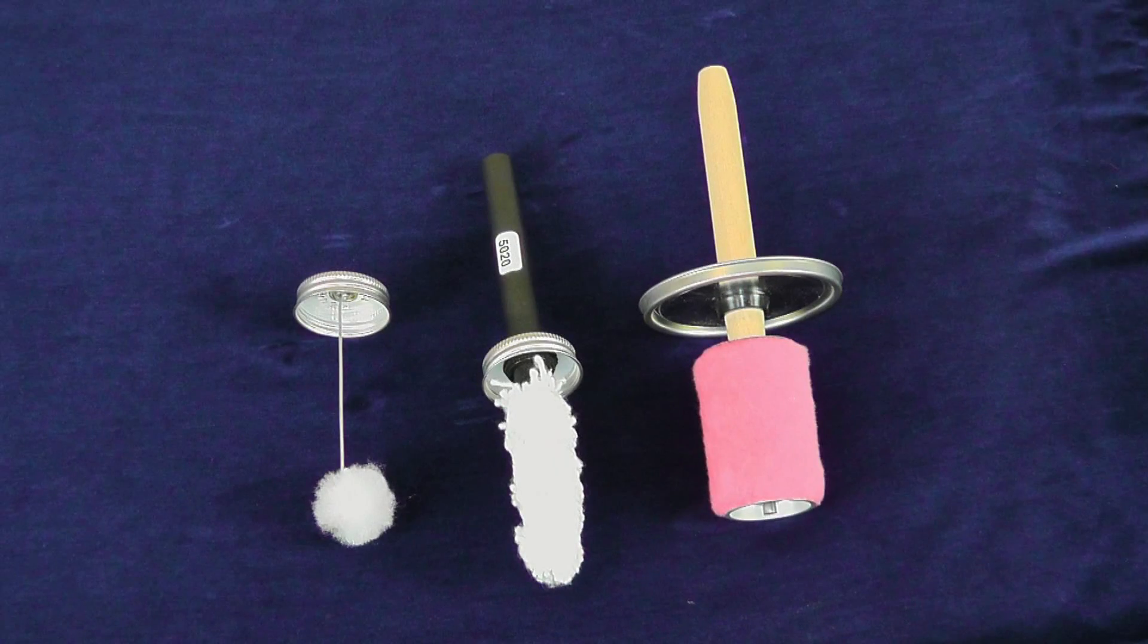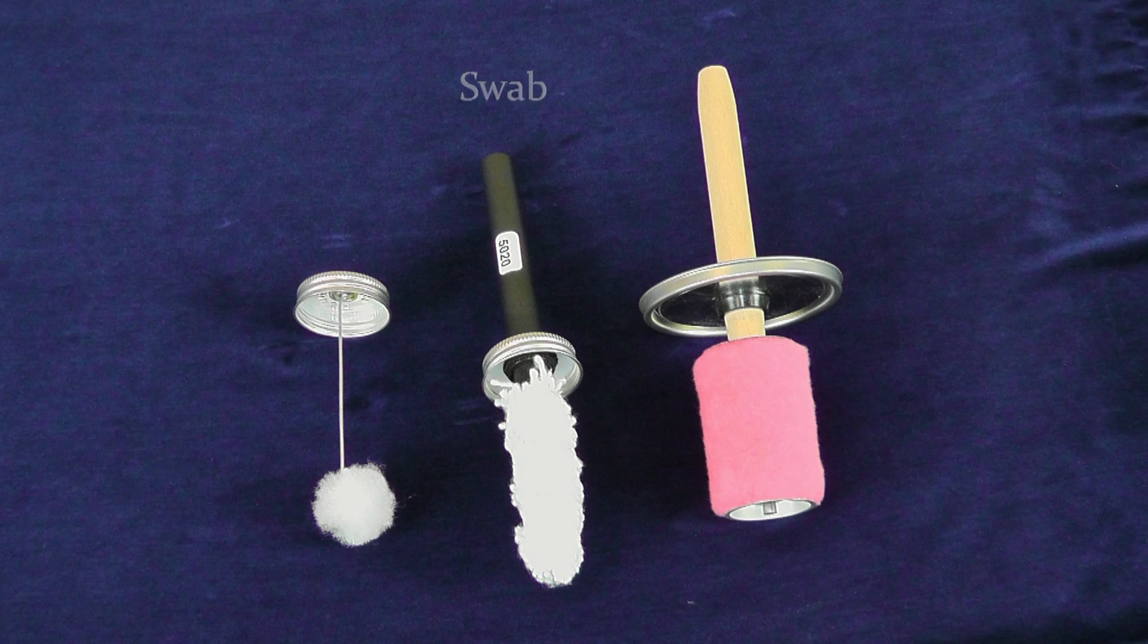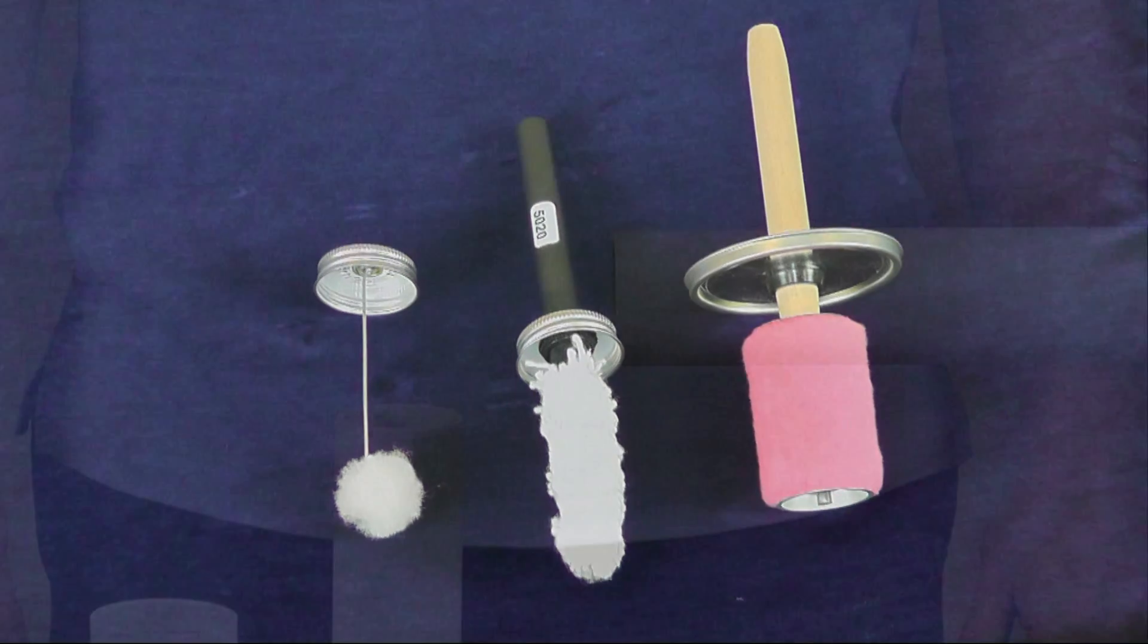Before applying the primer or cement, follow these four quick steps. First, ensure the use of a proper applicator of at least half the size of the pipe. In this case we are using a 2 inch pipe, the minimum size dauber or applicator will be 1 inch.